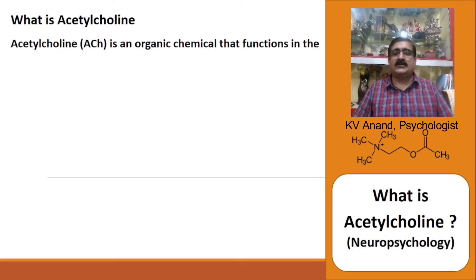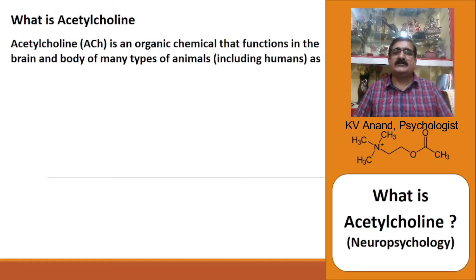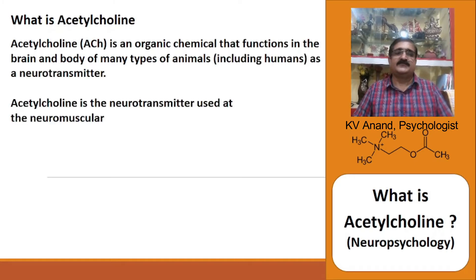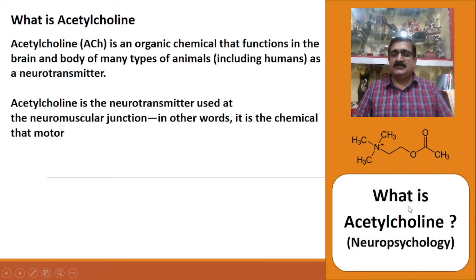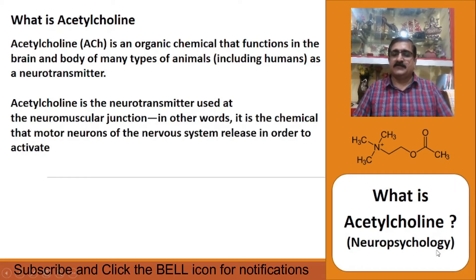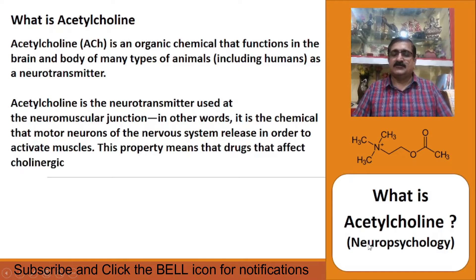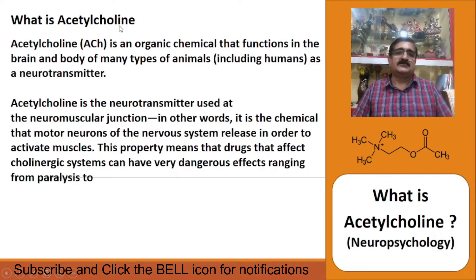Acetylcholine is an organic chemical that functions in the brain and body of many types of animals, including humans. We have it as a neurotransmitter, and we are seeing this lecture under neuropsychology, where neuronal systems are present in our body and brain. We do have this acetylcholine also.